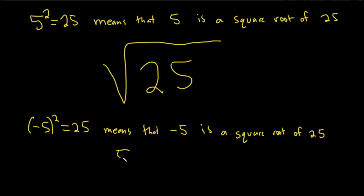So 25 has two square roots, 5 and negative 5. So which one is it? Well, it's 5.